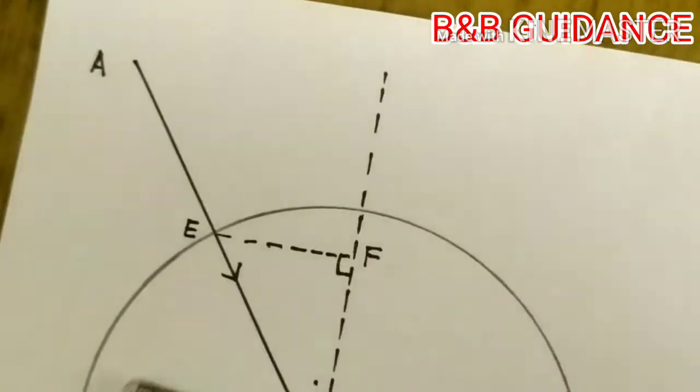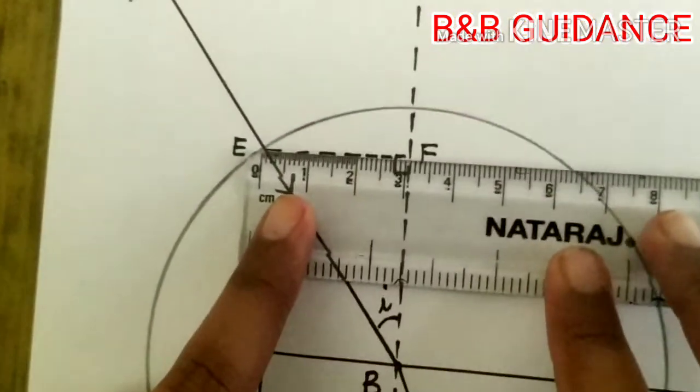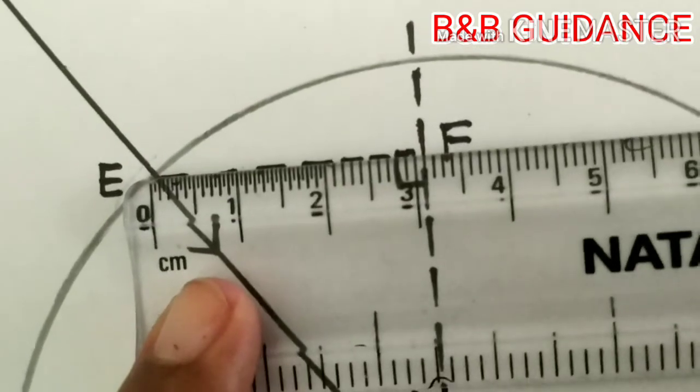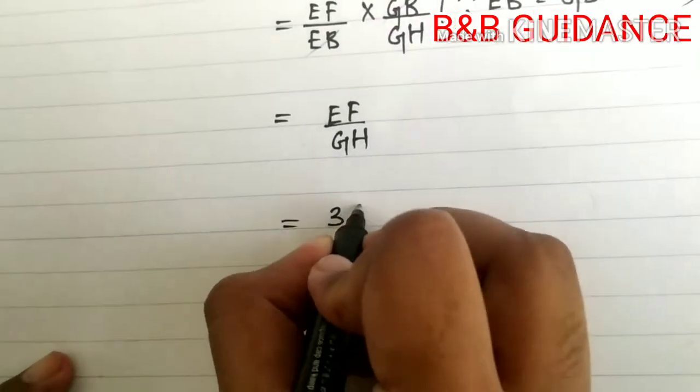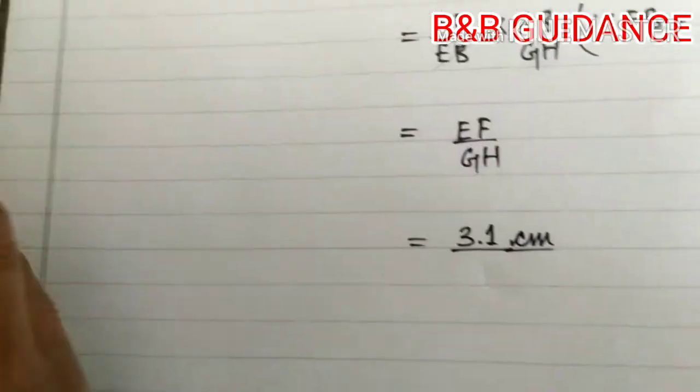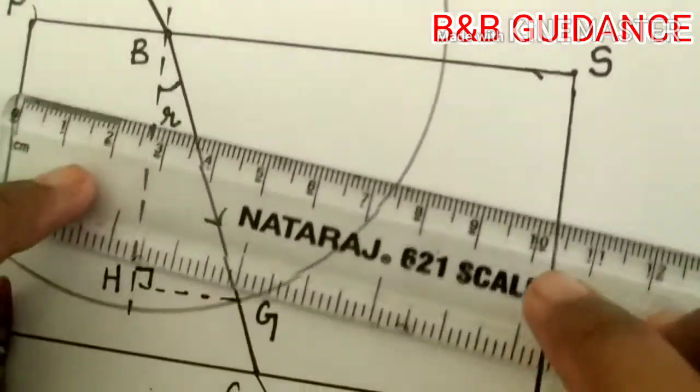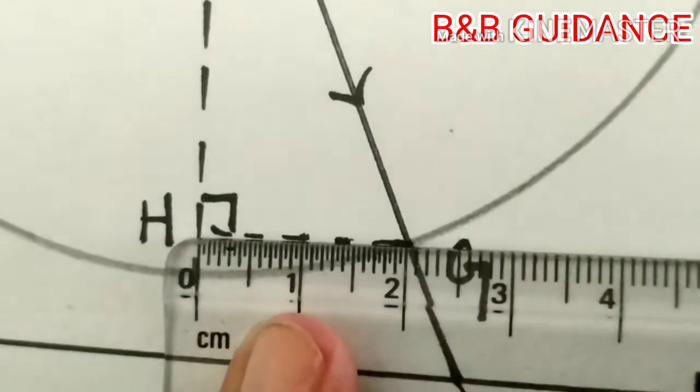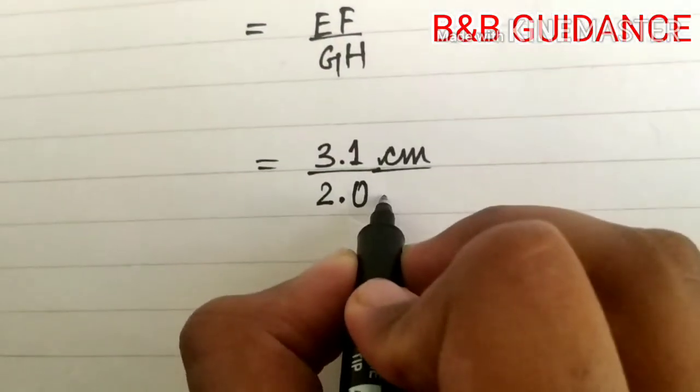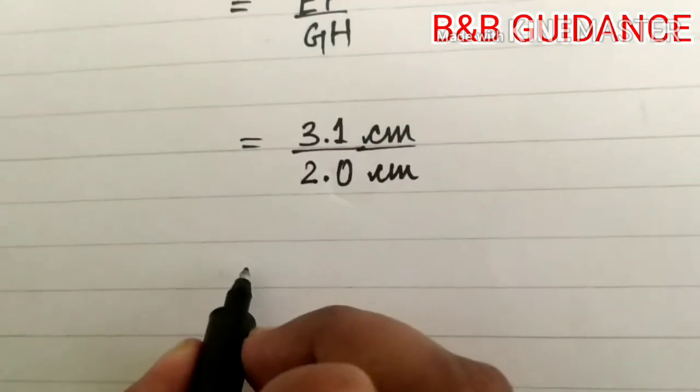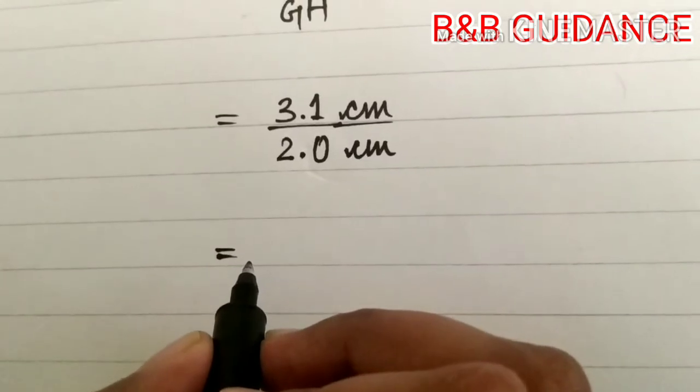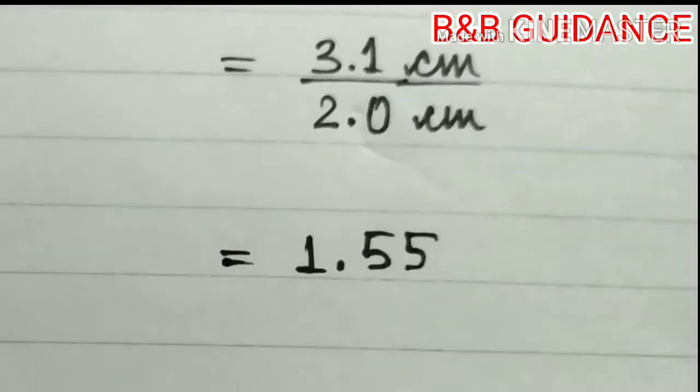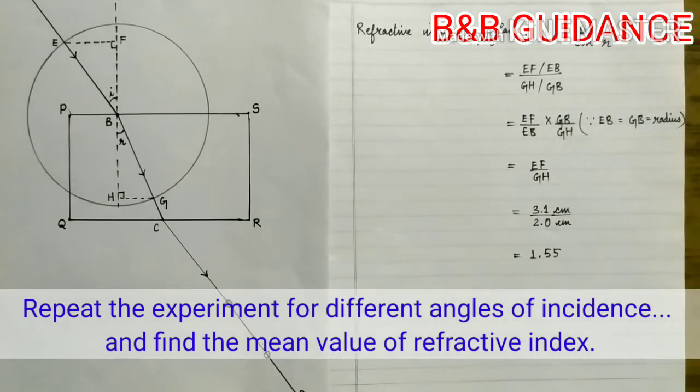Next we need the value of EF and so I am measuring it. And it is 3.1 cm. Now we need the measurement of GH. GH is equal to 2.0 cm. So that is equal to 1.55. And the refractive index has no unit. And so here the refractive index of the glass is 1.55.